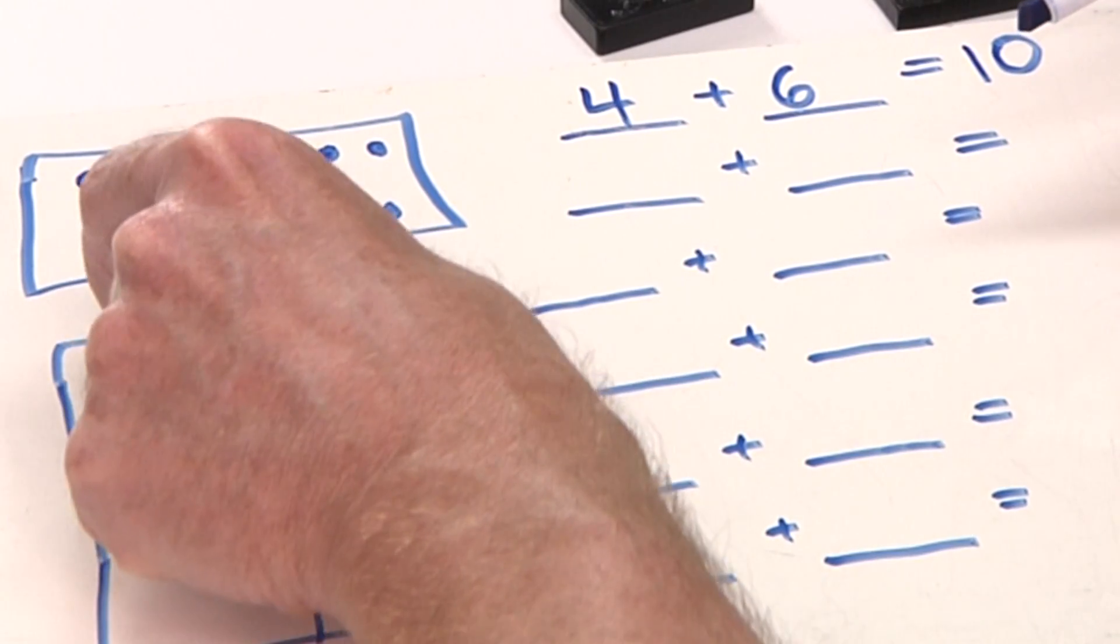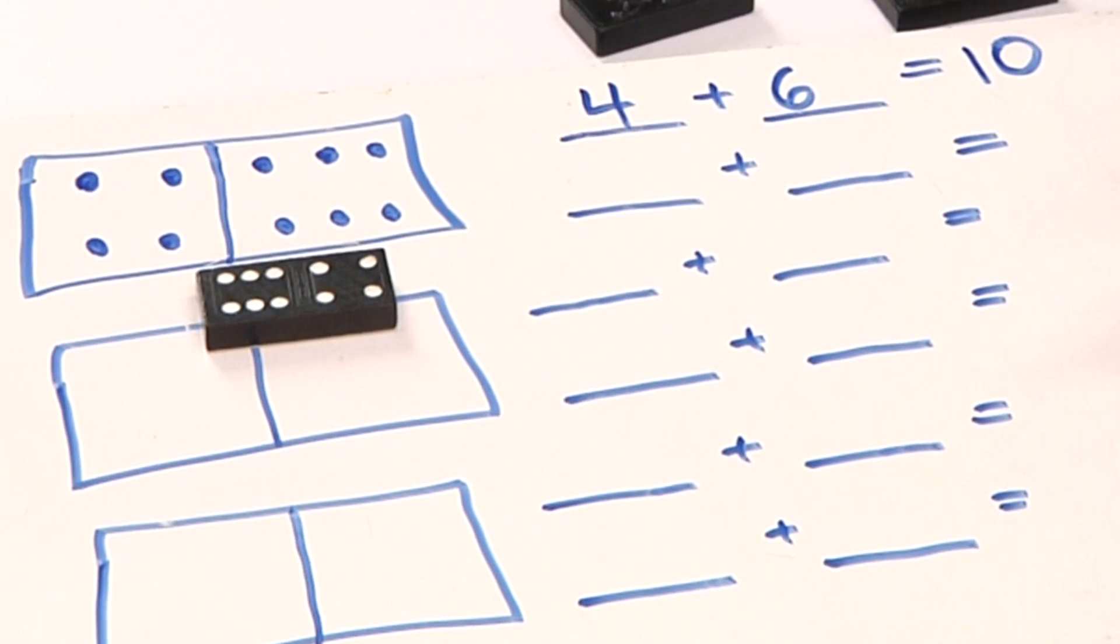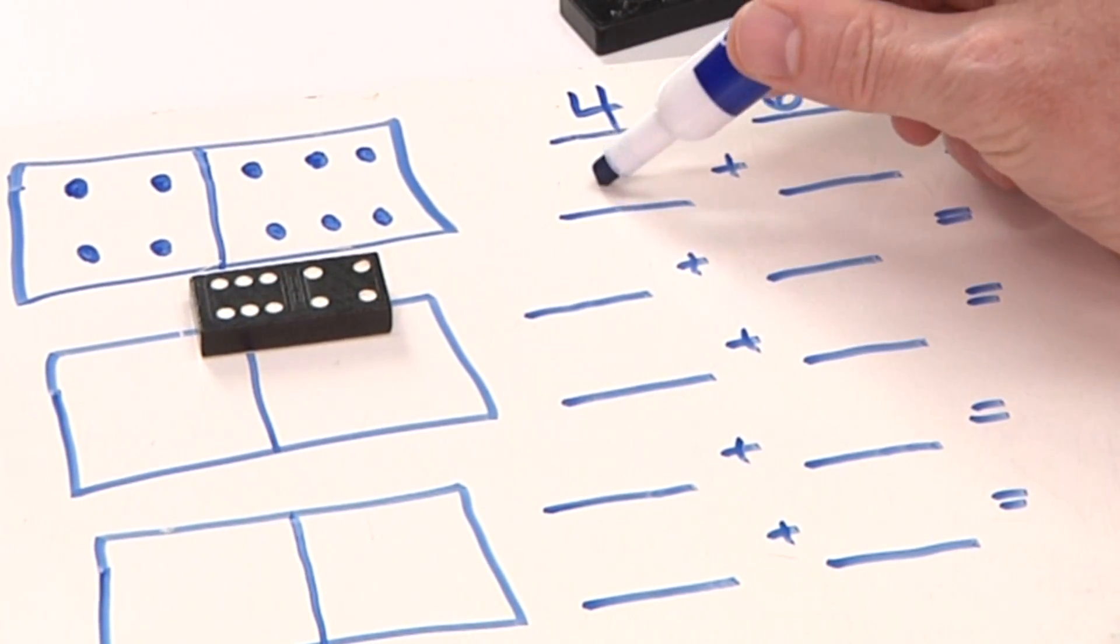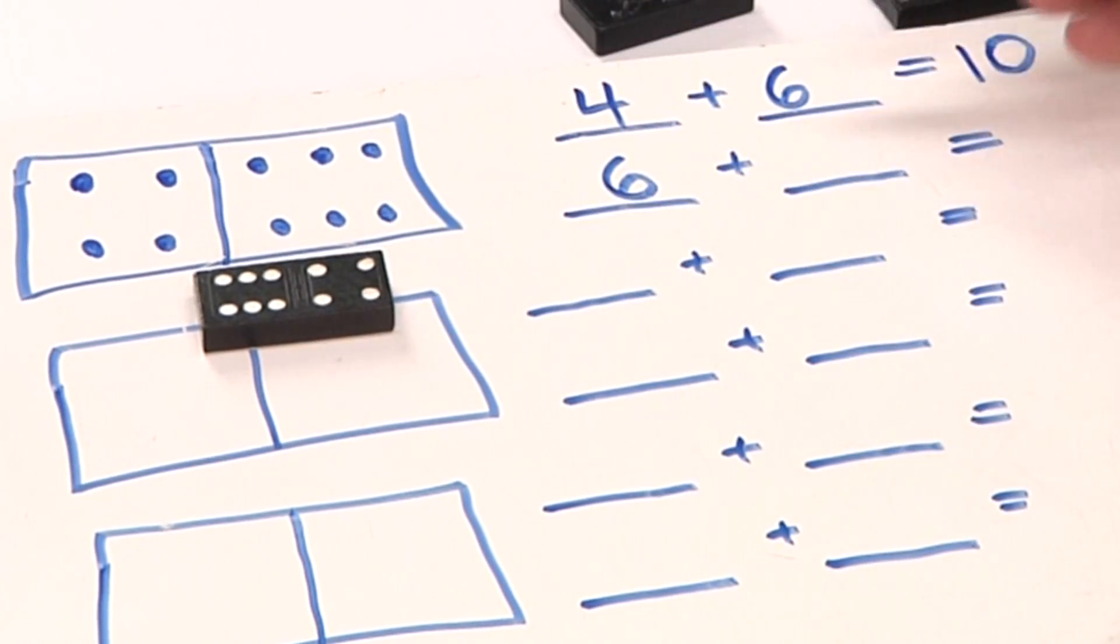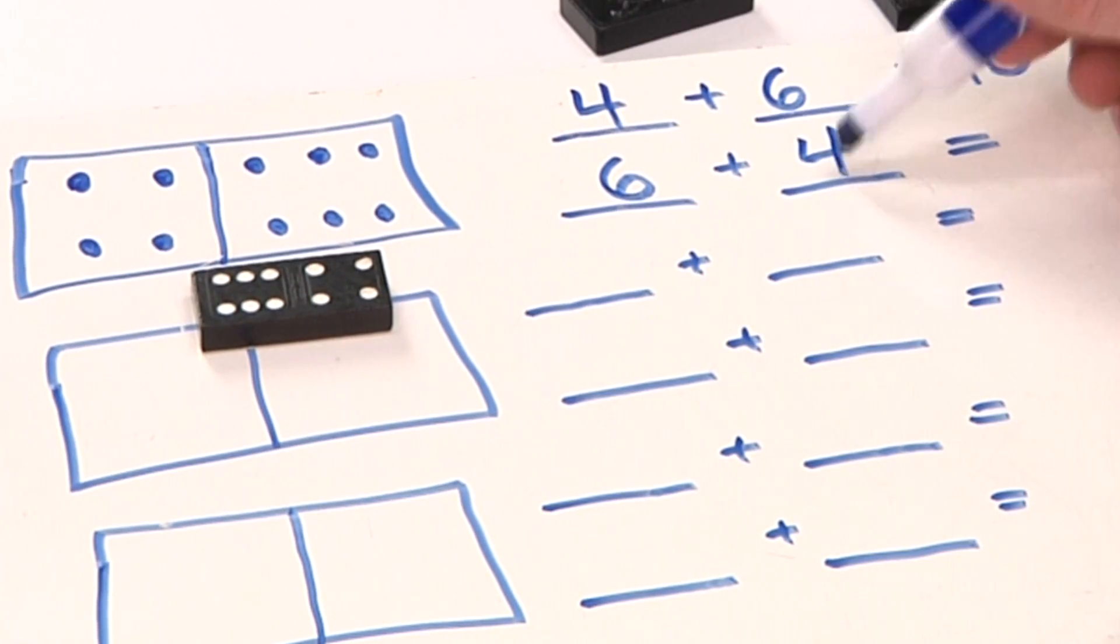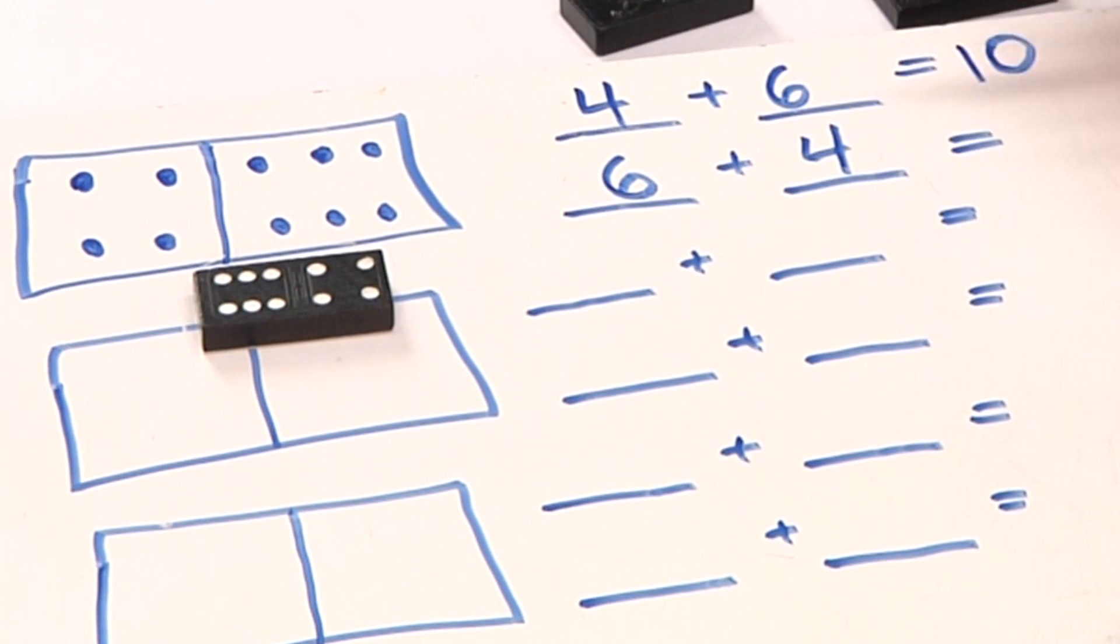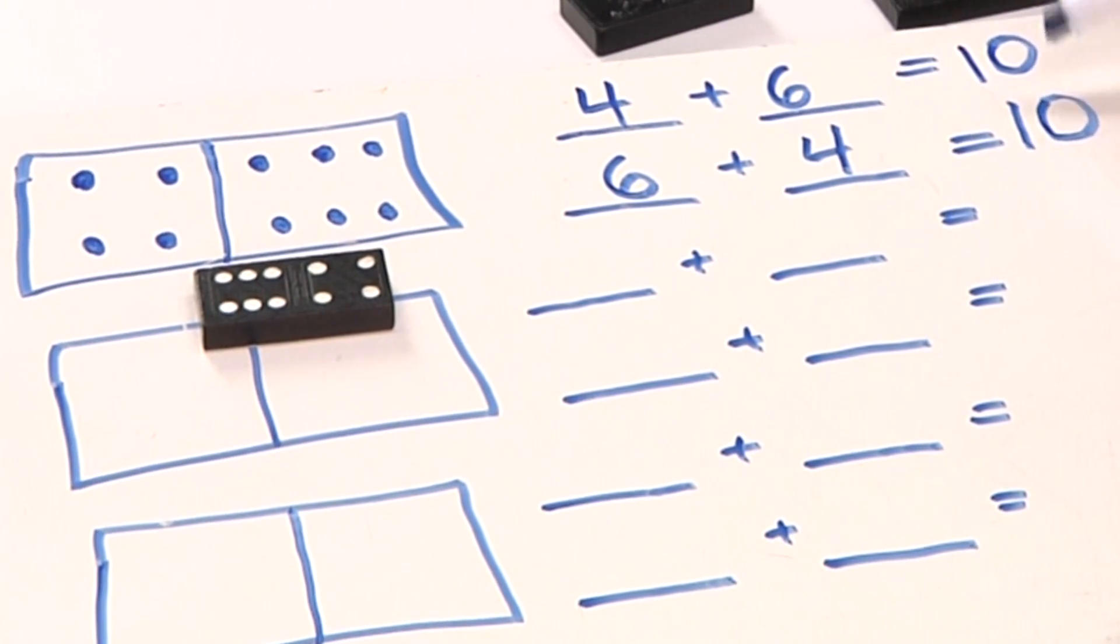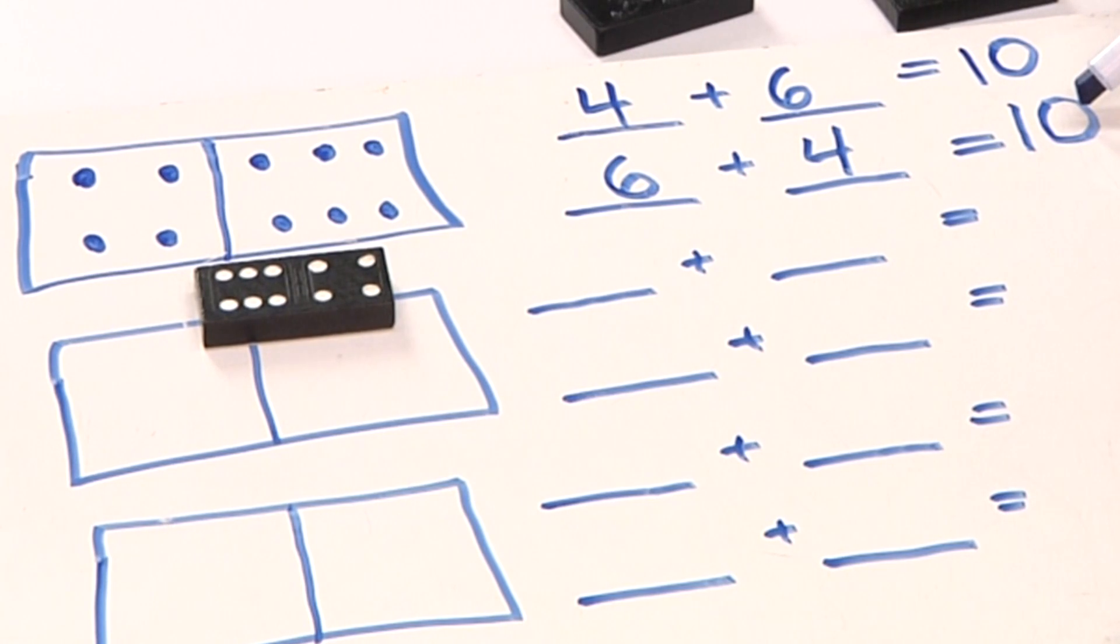Now what I'm going to do is take these dots and turn them that way. So now I have the 6 dots here and I put 6 here, and I have the 4 dots here: 1, 2, 3, 4. So 6 plus 4 equals 10: 6, 7, 8, 9, 10. These are called the addends, the 6 and the 4, and the 10 is called the sum.